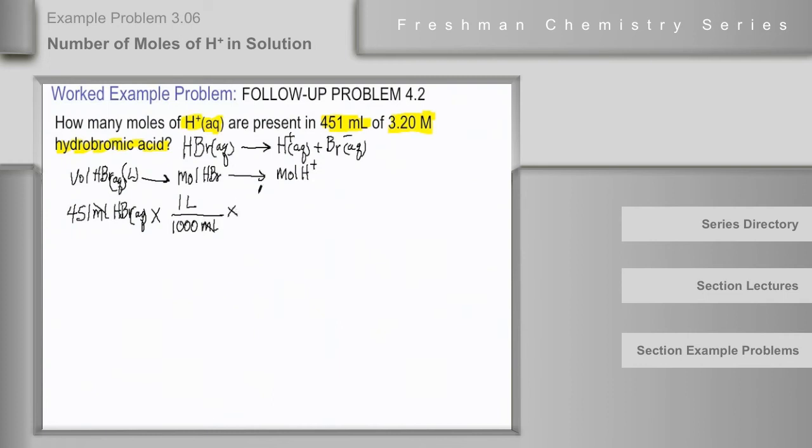Then we'll have the volume in liters, and we'll multiply that by 3.20 mole of HBr from the molar concentration in 1 liter, and this will get rid of the liters, and therefore all we need to do at this point is to convert this in a mole to mole conversion.